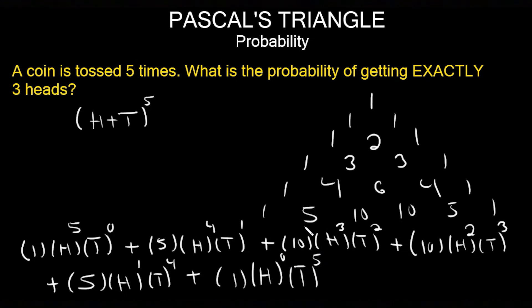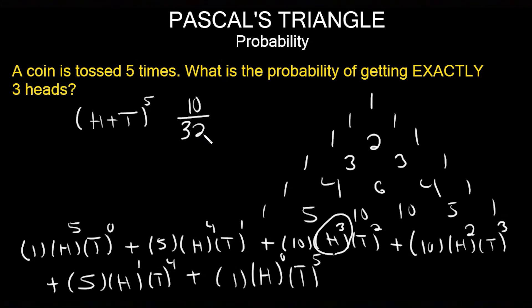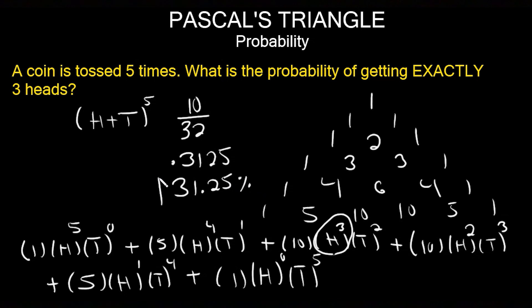They want the probability of getting exactly three heads, so there's only one possibility: h to the third power. The coefficient in front is 10, so 10 goes on the numerator. Adding up the entire row gives a total of 32, so 32 goes on the denominator. Plugging that in: 10/32 = 0.3125, or 31.25%. That problem's done.